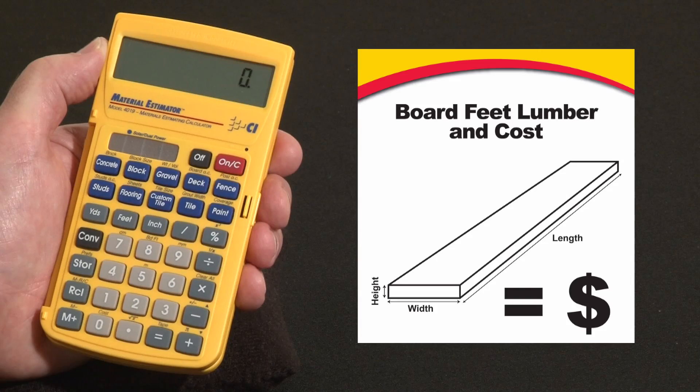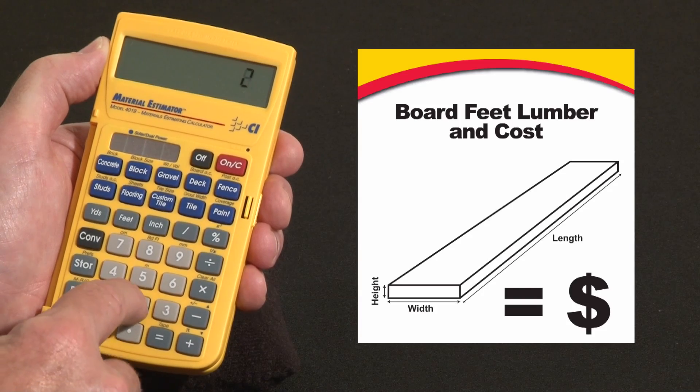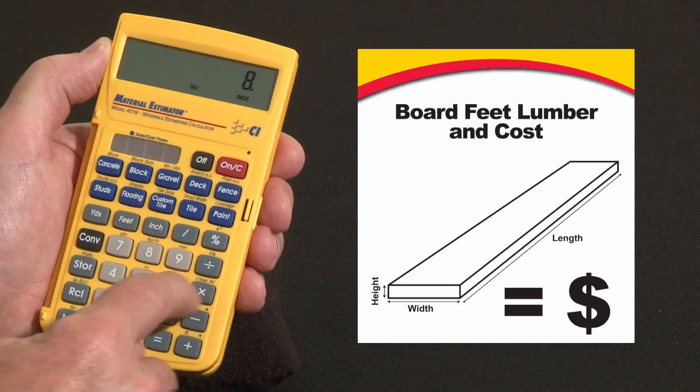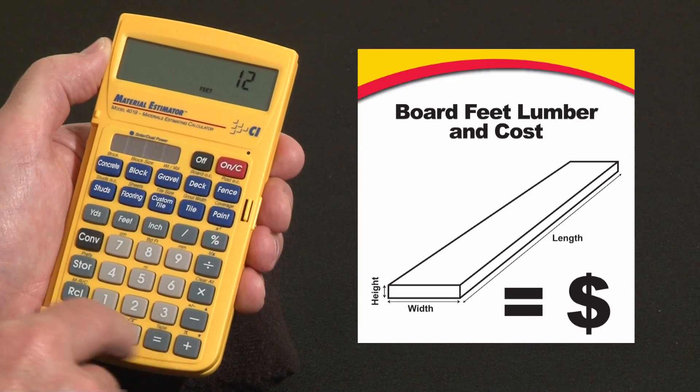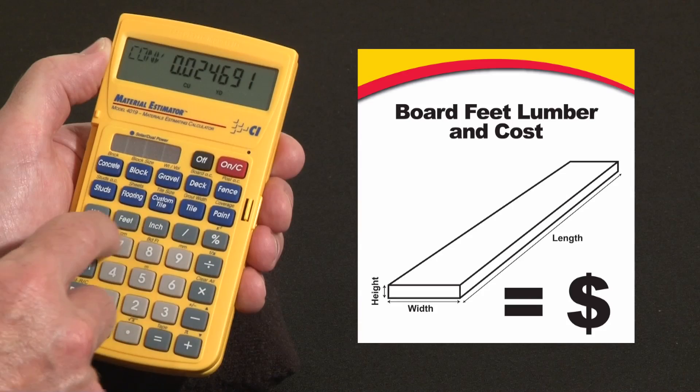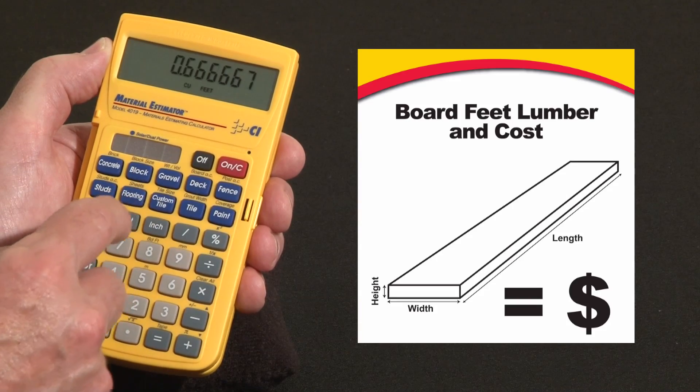So say you've got that same dimension, that 2x4x12. We would go 2 inches by 4 inches times 12 feet long, gives us some number or small number of cubic yards. You could also see that as cubic inches or cubic feet.